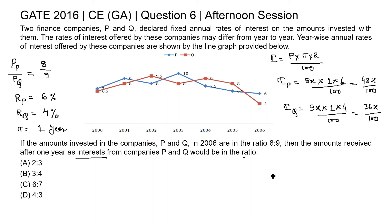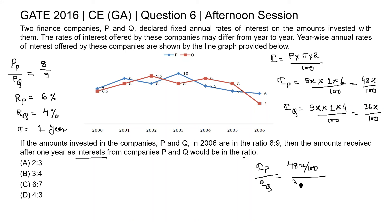Now the ratio of interest received for company P to that of Q is 48x/100 divided by 36x/100. The 100s and the x's cancel out, giving 48 to 36, which simplifies — since 12 × 4 = 48 and 12 × 3 = 36 — to 4 to 3.